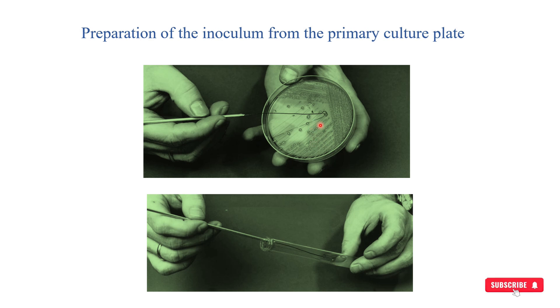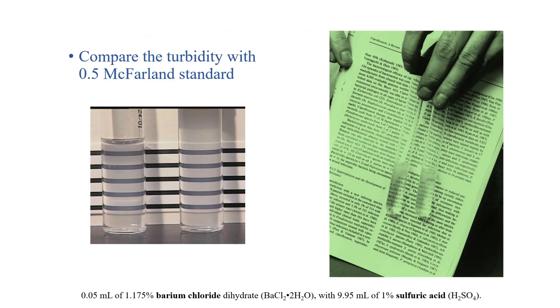So, one colony we will take with the help of this inoculating loop and we will transfer or inoculate this single colony into a liquid culture or broth. This broth may be sterile water, nutrient broth or peptone water and this is the first step. After that, the inoculum we will compare with this 0.5 McFarland standard.